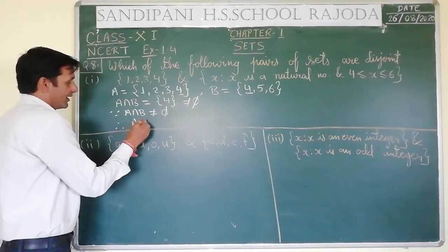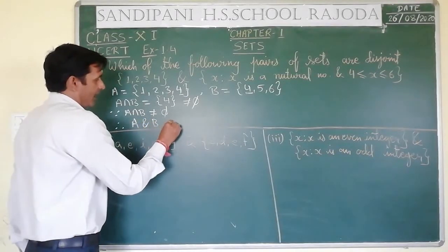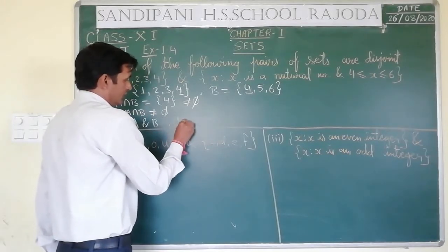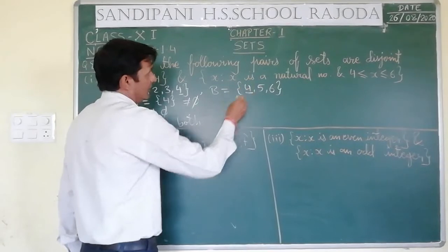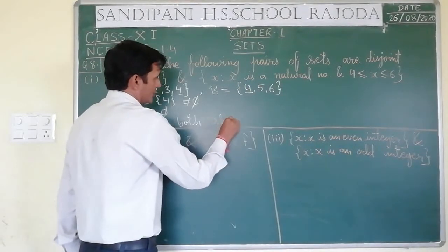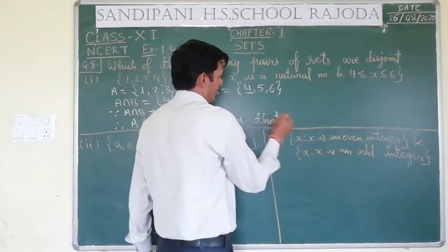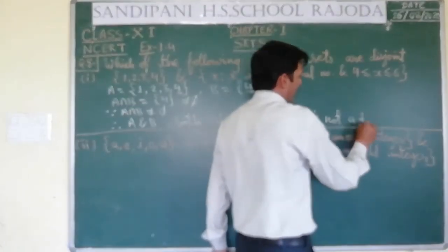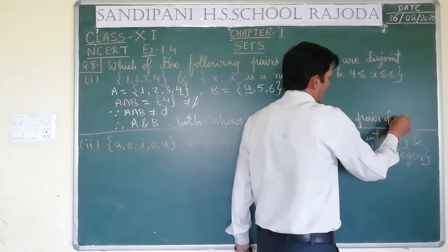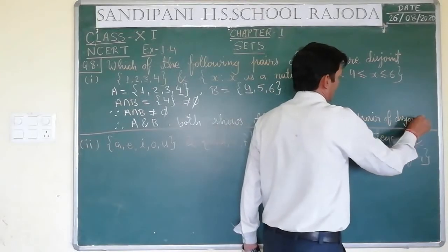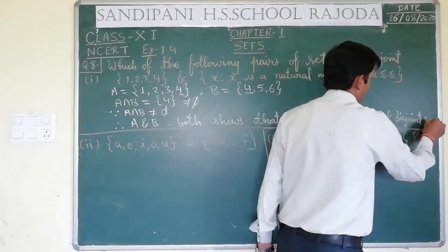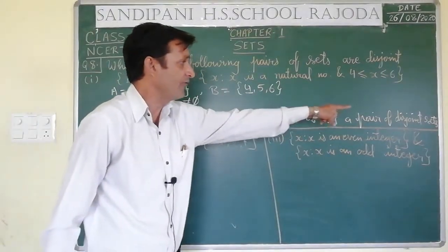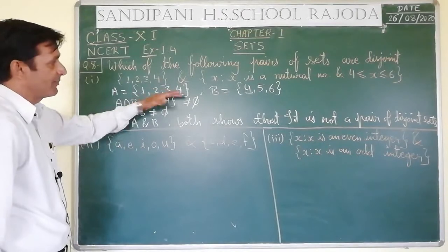So now what will we say? Therefore A and B both show that it is not a pair of disjoint sets. This is not a pair of disjoint sets.